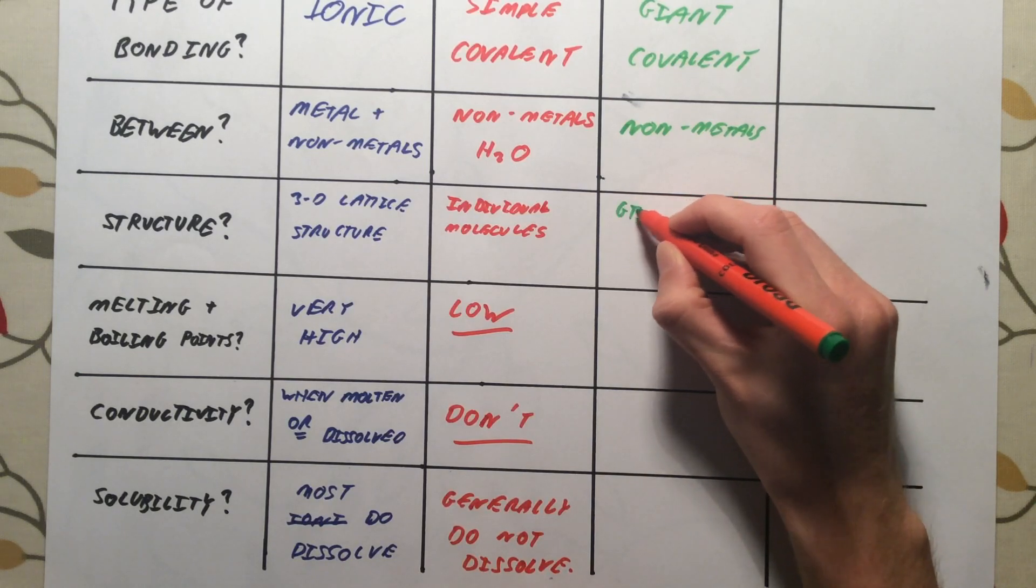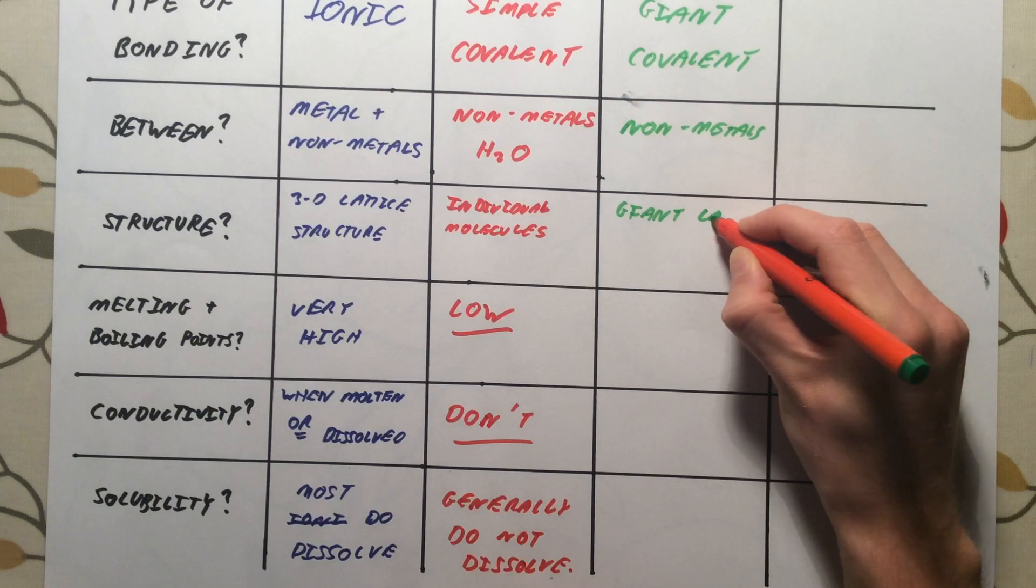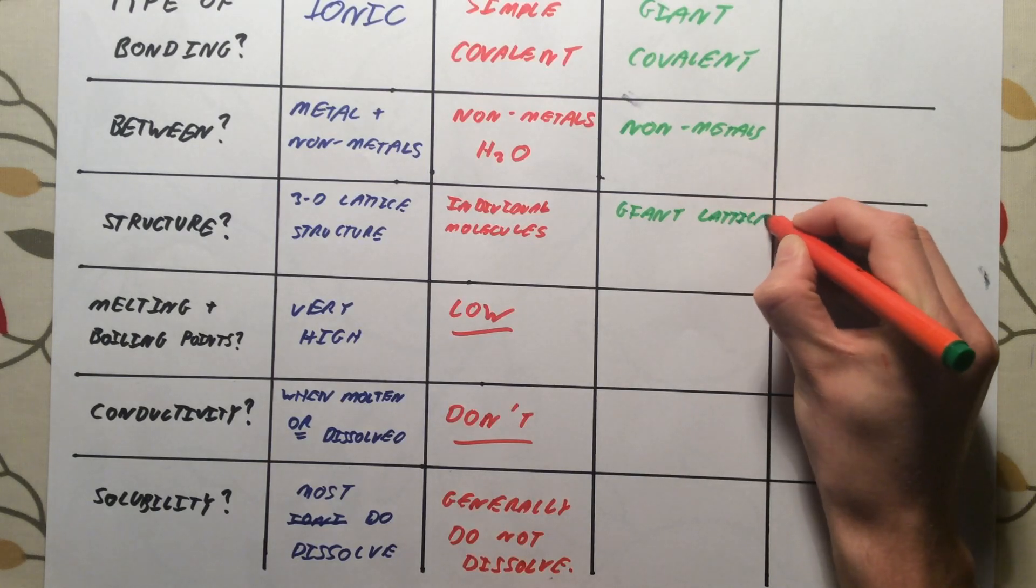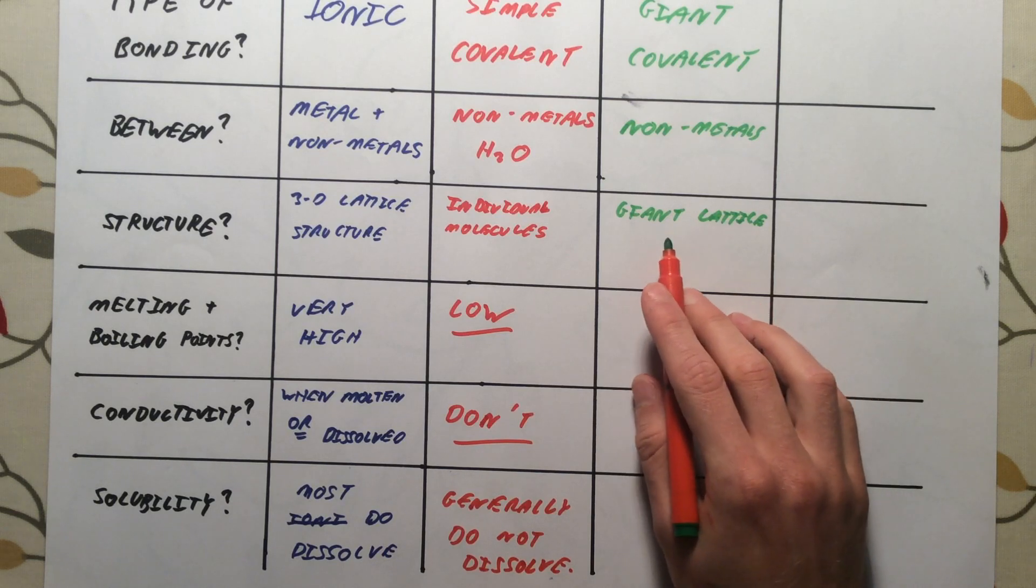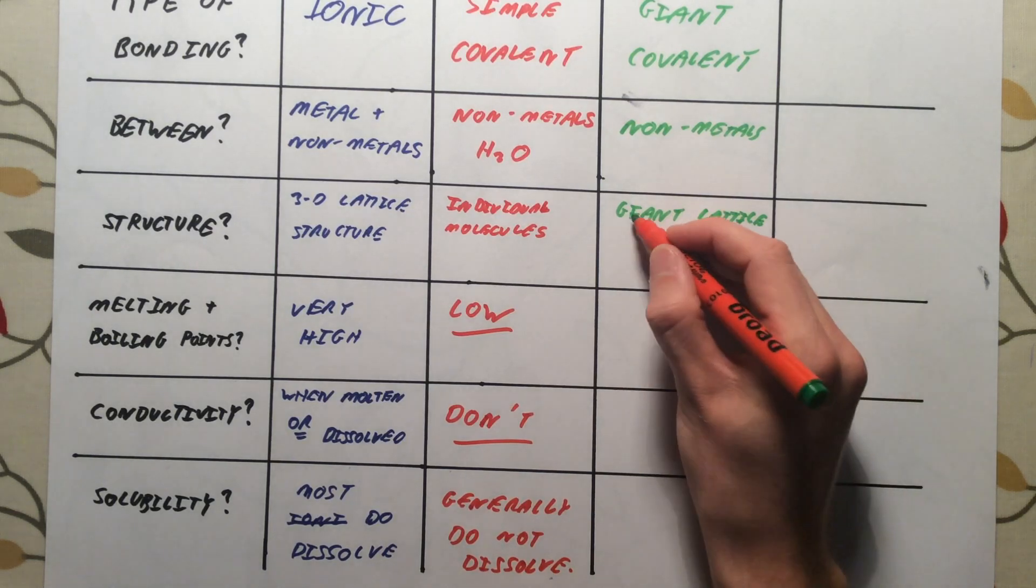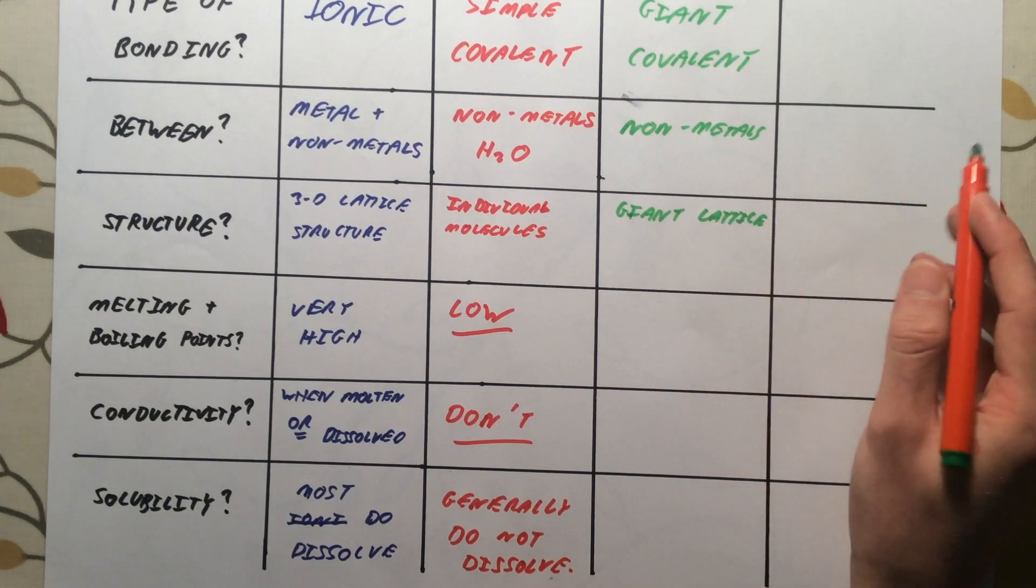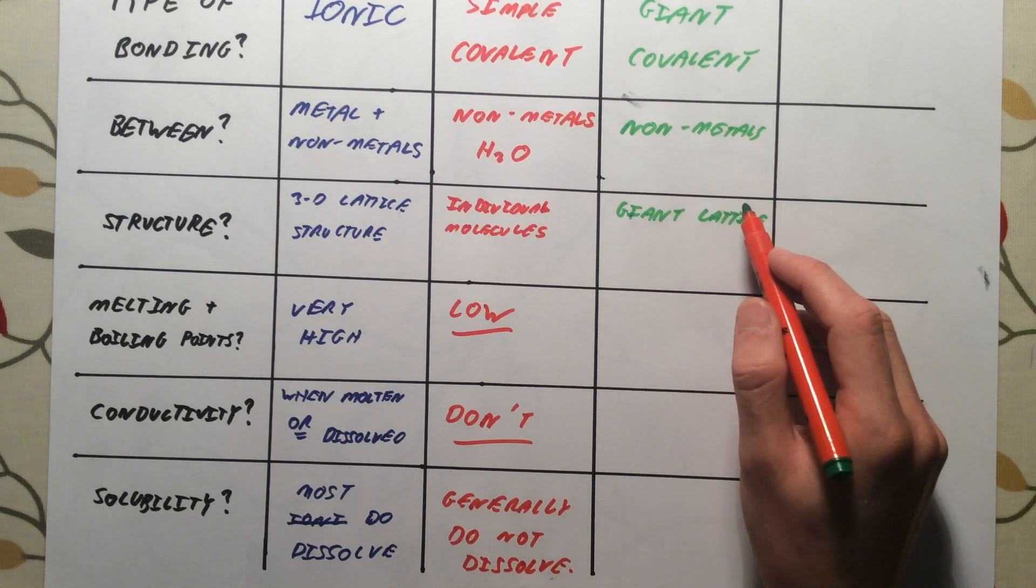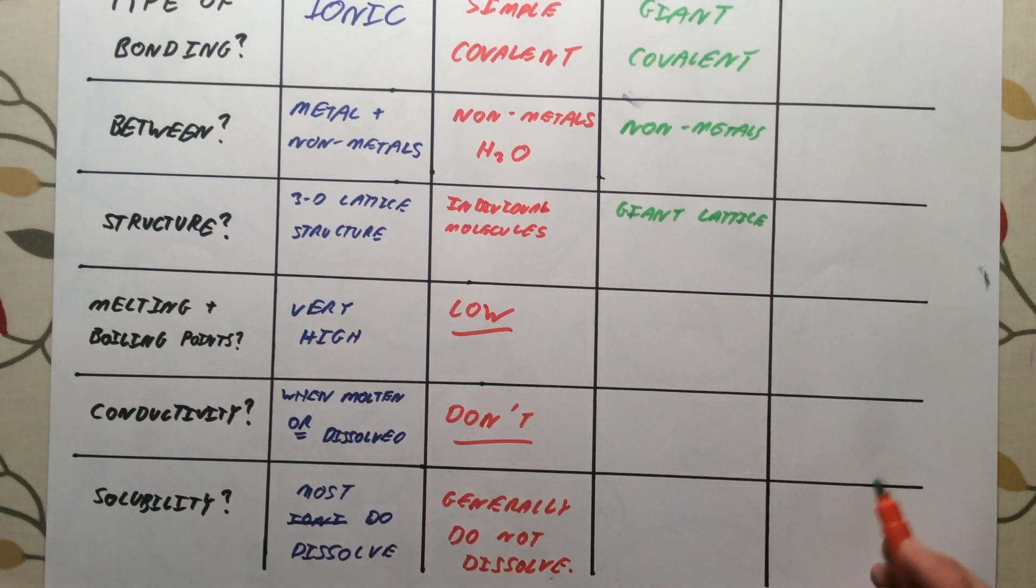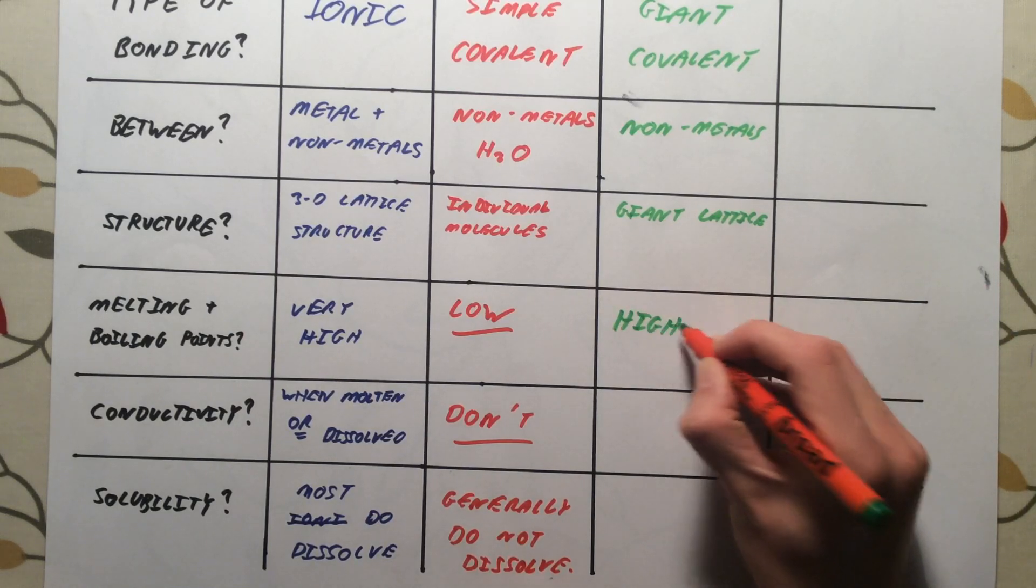Structure, we get a giant covalent lattice. So we have lots and lots of, for diamond and graphite, for example, lots and lots of carbon atoms, all very strongly bonded together with strong covalent bonds, forming a giant lattice structure. There are no individual molecules. There are no intermolecular forces. In order to melt graphite or diamond, we need to break all those strong covalent bonds. They have extremely high melting and boiling points.